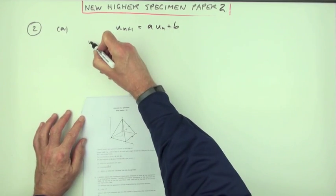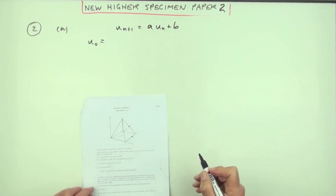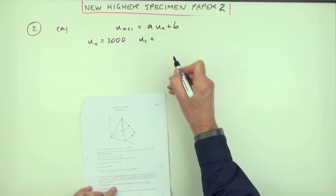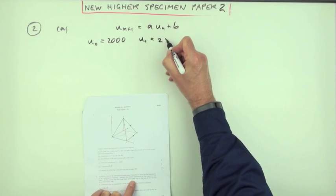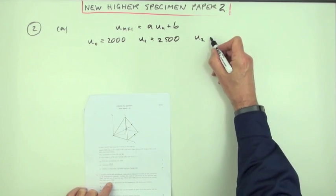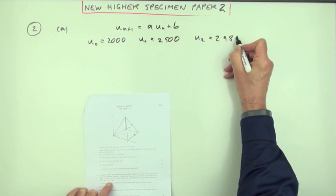What does it say? Initially, quite often for initially you say U naught. So initially the population was 2,000. After a year, so we'll call that U1, it was 2,500 and after another year it went up to 2,980.